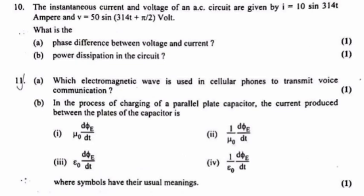Question 10: The instantaneous current and voltage of an AC circuit are given by I is equal to 10 sine 314 T ampere and V is equal to 50 sine 314 T plus pi by 2 volt. What is the A) phase difference between voltage and current? Answer: Pi by 2. B) Power dissipation in the circuit. Answer: Zero.